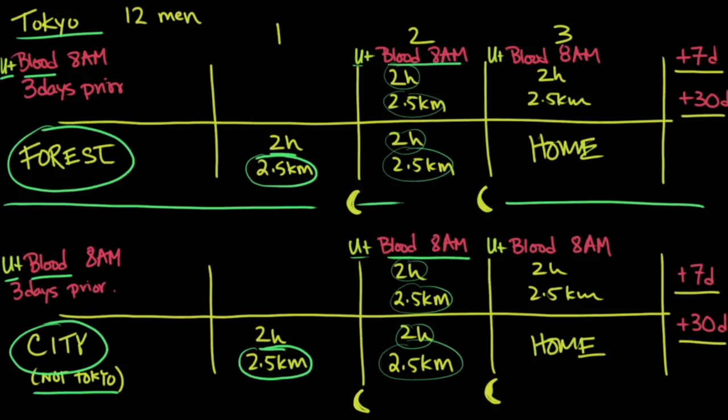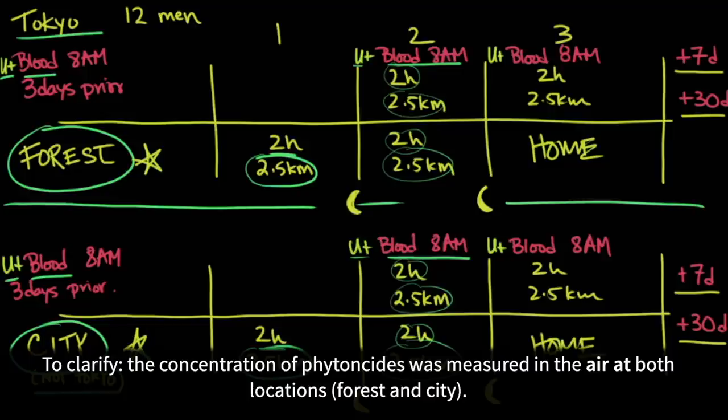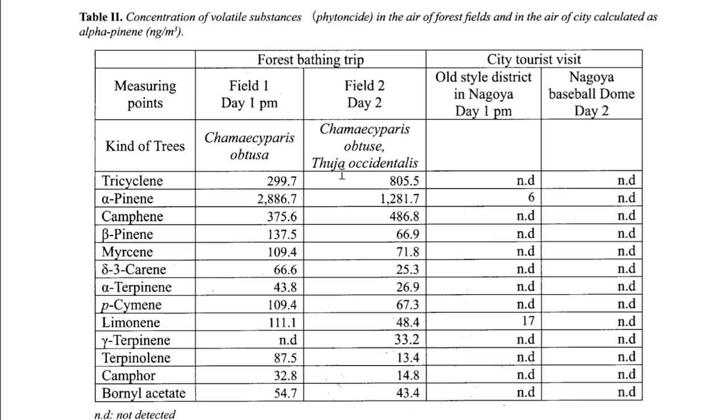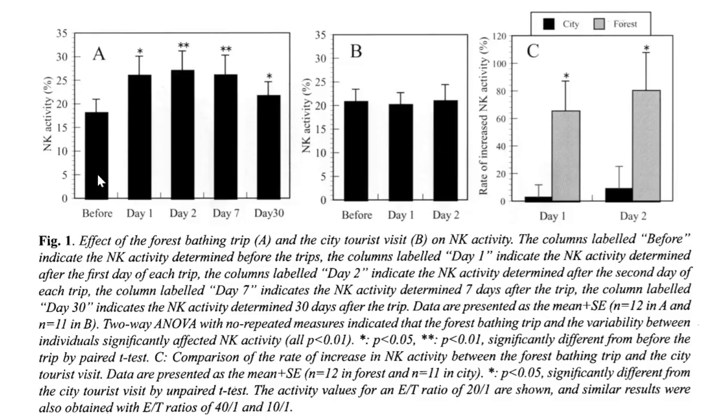What they also did was they measured it again seven days later in both groups and then 30 days later in both groups. There was one other thing that they measured: phytoncides, those aromatic compounds that are secreted by trees, the alpha pinenes and the beta pinenes and the isoprenes. They measured it in the forest and also in the city. Here's a list in terms of nanograms per cubic meter. You can see here the forest bathing trip was completely filled with these phytoncides: tricyclines, alpha pinenes, camp fiends, beta pinenes, etc. Whereas in the city visits you can see that for the most part there was none that was detected.